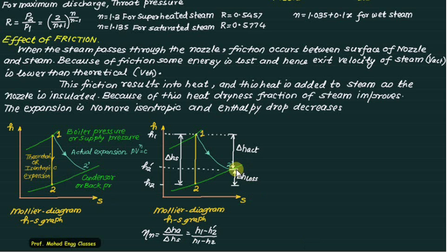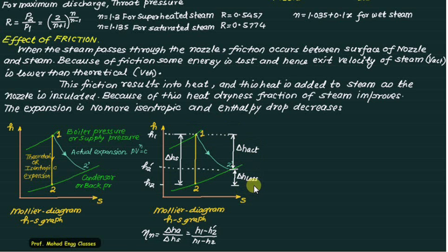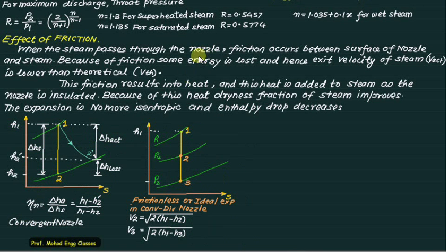Because of friction there is a loss of enthalpy given as h2-dash minus h2. If there is no friction, expansion is from 1 to 2 giving delta-hs; with friction it is from 1 to 2-dash giving delta-actual. Delta-hs is always less than delta-actual by the enthalpy loss due to friction. Hence nozzle efficiency is delta-actual divided by delta-hs equals (h1 minus h2-dash) divided by (h1 minus h2).